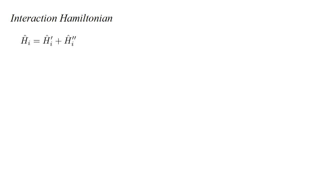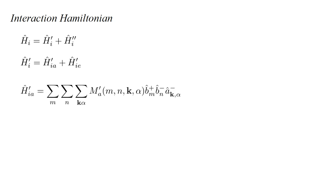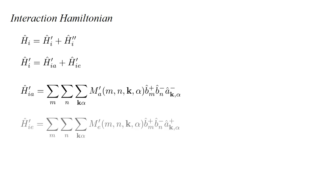We have worked out the details of the interaction Hamiltonian for a hydrogen atom in an electromagnetic field, and expressed it as a sum of two terms, H-hat_i prime and H-hat_i double prime. We further separated H-hat_i prime into absorption and emission terms. The absorption term is the sum over all pairs of electron states m and n, and over all photon states k-alpha, of a coefficient M_a prime times a creation operator for electron state m, a destruction operator for electron state n, and a destruction operator for photon state k-alpha.